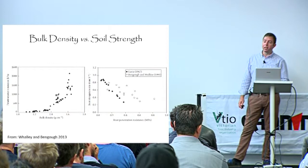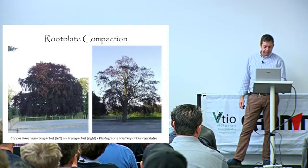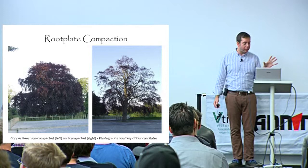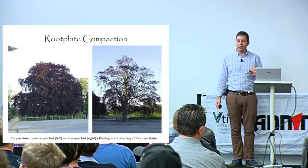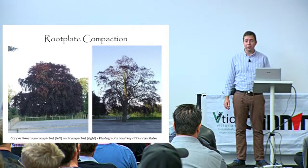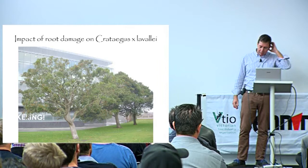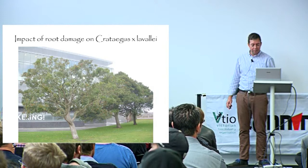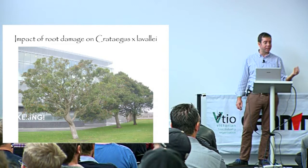Here are two copper beech trees - one paved over and one that remained in a field situation. You can see the huge influence compaction has had: the leaf area index has almost dropped through the floor, very few leaves, massive canopy dieback versus what is quite a nice tree - and that can happen in just a few years. Another example shows Crataegus slightly closer to a development site with a much thinner canopy and dieback versus ones further away with a much denser canopy.